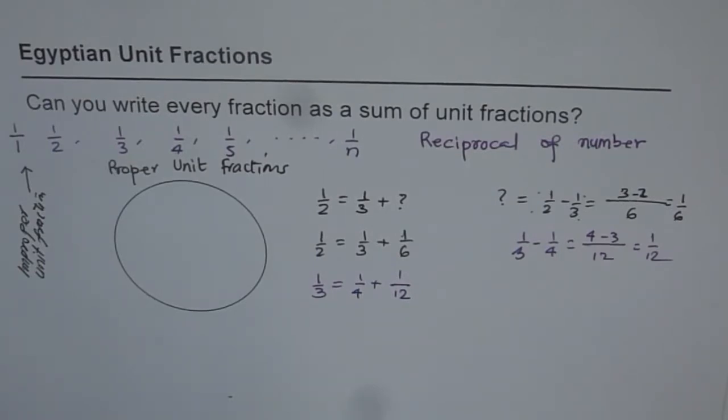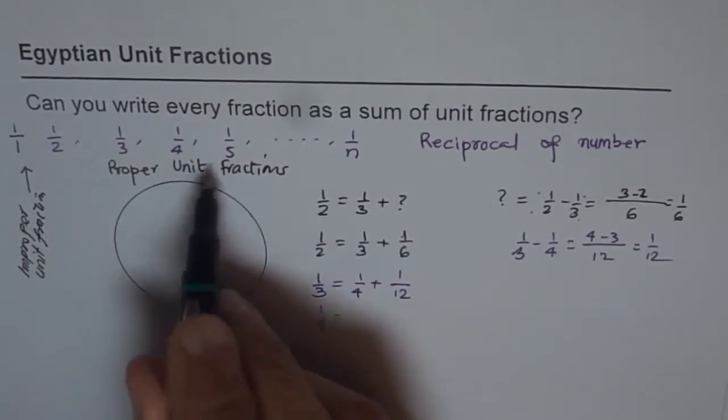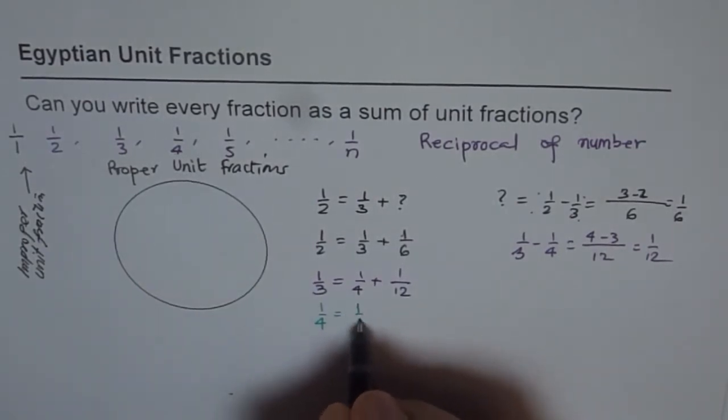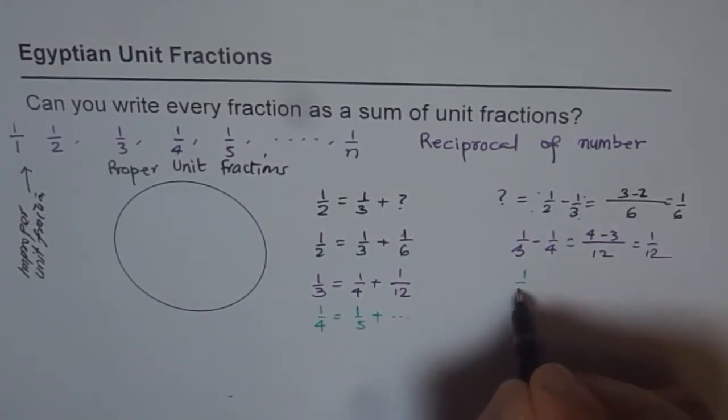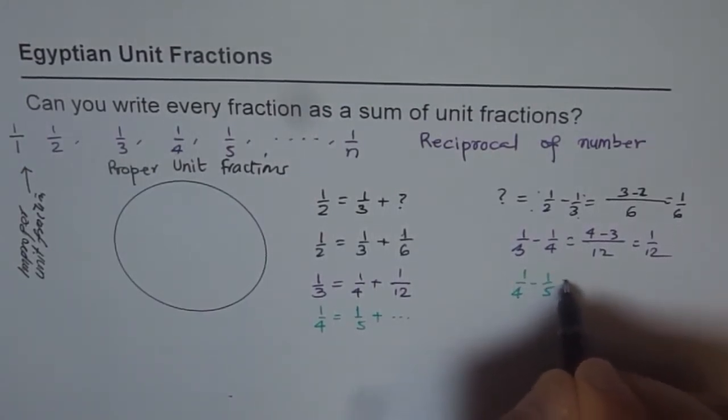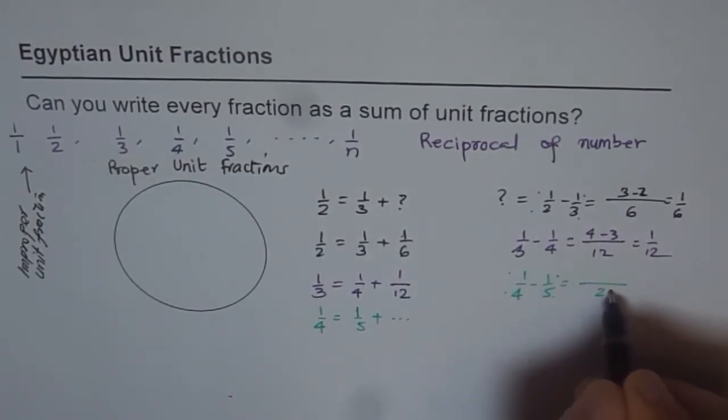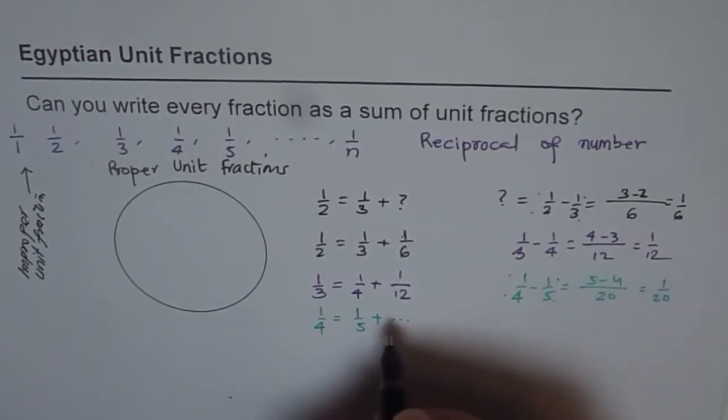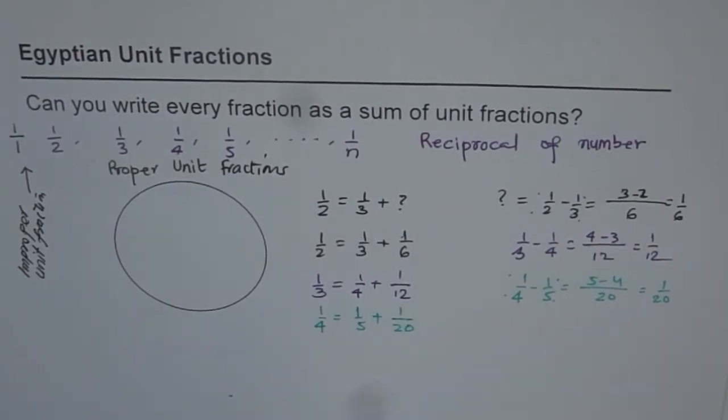How about one over four itself? One over four could be written as next number one over five plus what? It should be one over four minus one over five. That means multiply these by fives, these by four. So we get twenty and five minus four, which is one over twenty. So we get this as one over twenty. And we get our answer. Wow, that is extremely interesting.